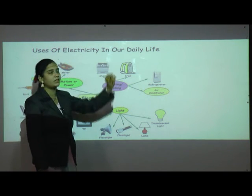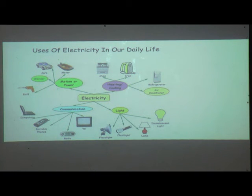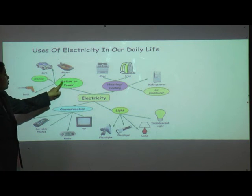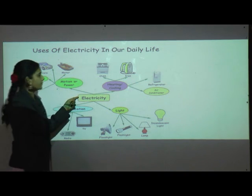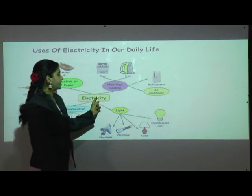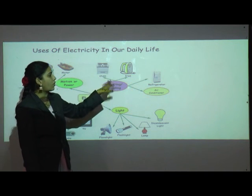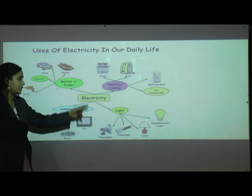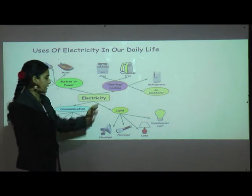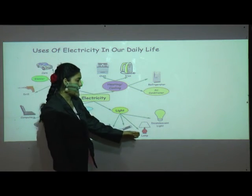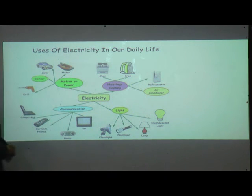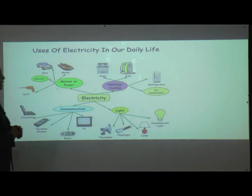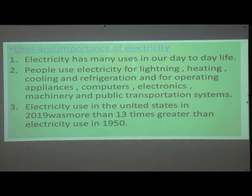Let's see the uses of electricity in our daily life. Cars, motors, drills, blenders — motion and power depend on electricity. Ovens, irons, refrigerators, and air conditioners are used for heating or cooling and all depend on electricity. For communication, computers, portable phones, radio, and TV also depend on electricity. Even lights — flashlights, lamps, and bulbs — all depend on electricity.